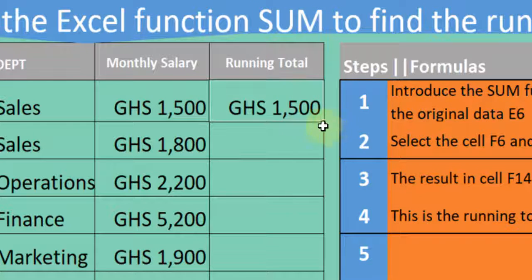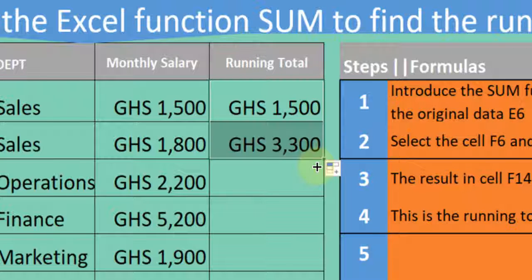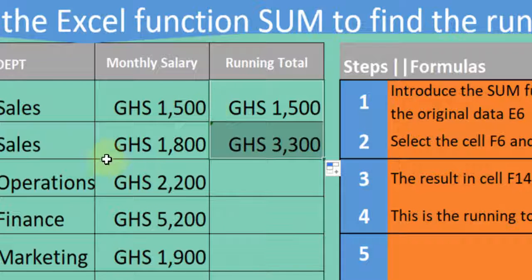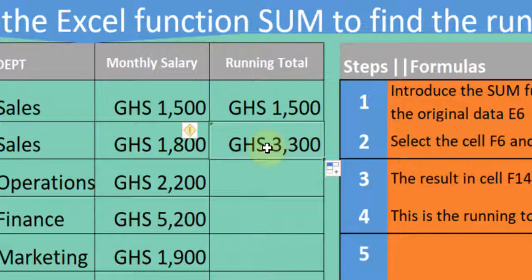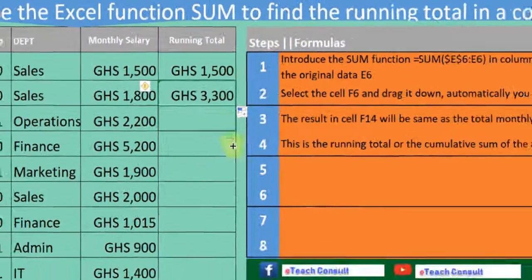We put our cursor on the cell, go for the plus sign, then drag it down. As we drag it down to the second cell, you can see that 1500 plus 1800 gives us 3300. That is the cumulative sum.